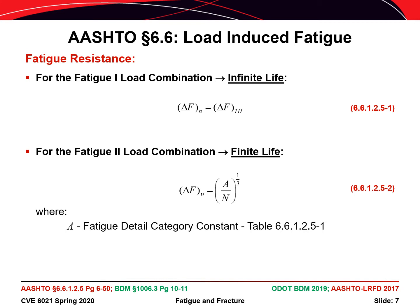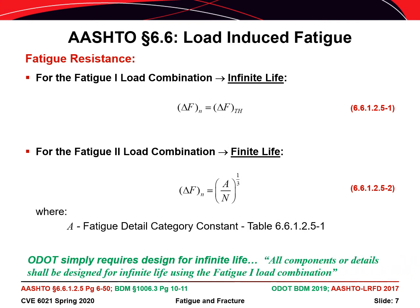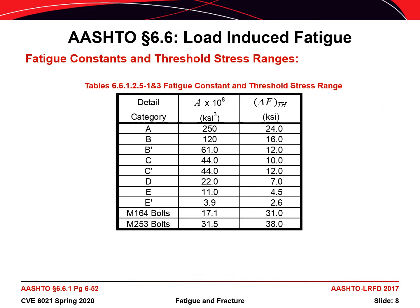When A over N to the 1/3 power is plotted on log paper, it appears as a straight line, where N is the number of stress cycles expected at the detail. Note that the ODOT bridge design manual requires that bridges be designed for infinite fatigue life. The values of A and delta F sub TH are constants determined based on the particular detail being evaluated, and they are looked up in tables based on the detail category assigned to the detail.